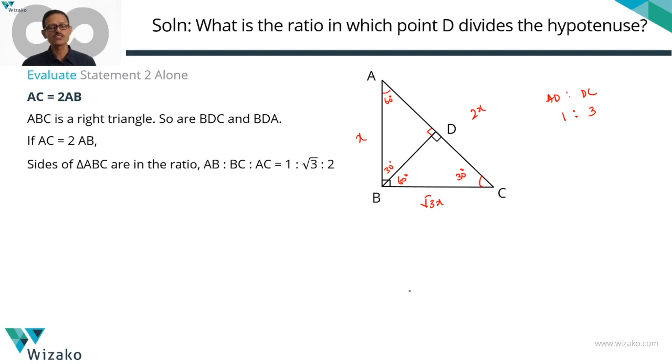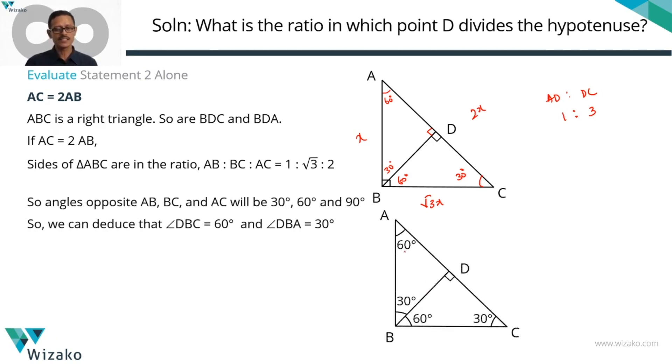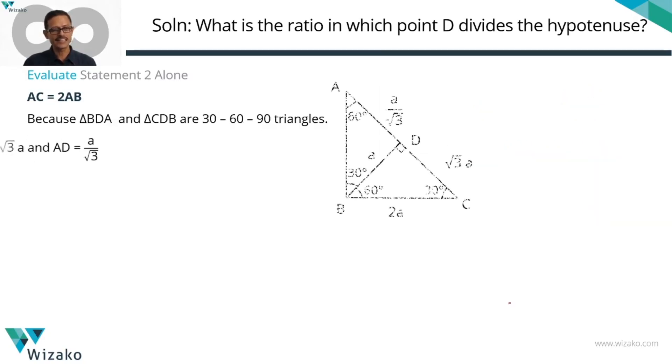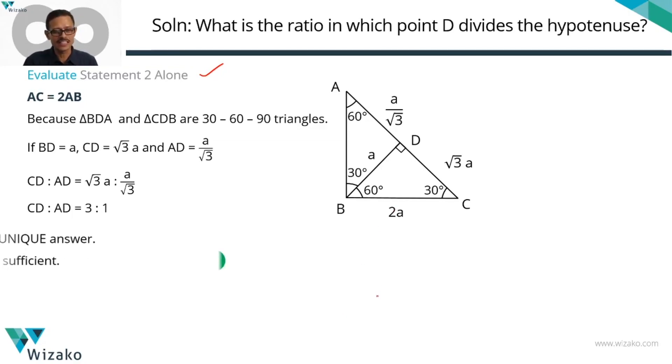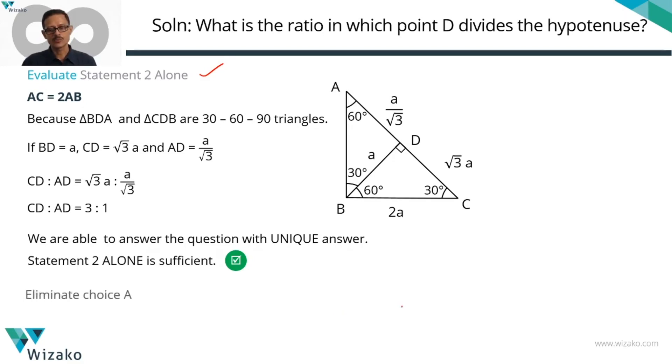Establish that this is 1 is to root 3 is to 2. ABC is 1 is to root 3 is to 2. Therefore, the angles are going to be 30, 60. Correspondingly, these two angles can be reduced to be equal to 60 and 30. So all three triangles, ABC, BDC and BDA are 30, 60, 90 right triangles. Now we are going with BD to be equal to A. Therefore, the side opposite to 60 degrees is going to be root 3A. BD is opposite to 60 degrees which means the side opposite to the 30 is going to be 1 upon root 3 of that which is A by root 3. So AD is to DC is going to be 3 is to 1. Statement 2 alone is also sufficient. Each statement is independently sufficient. Answer option is choice D.